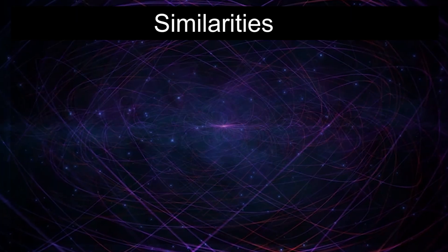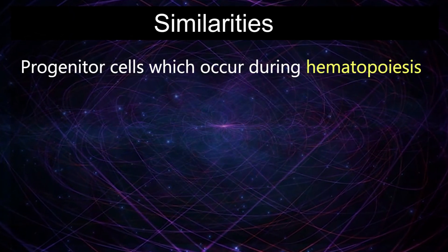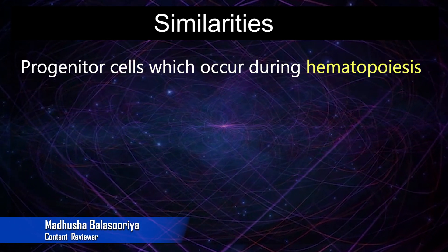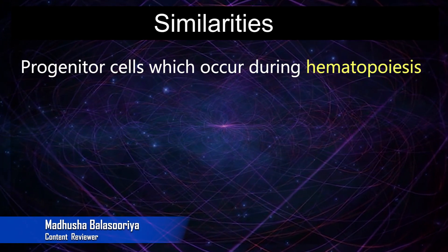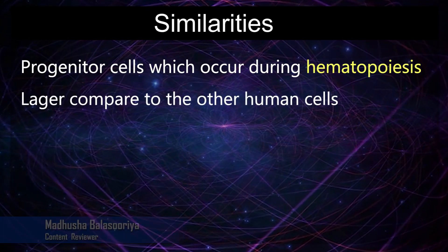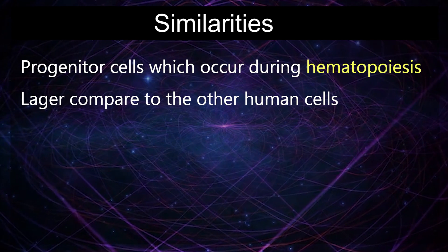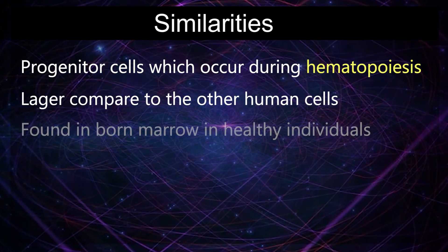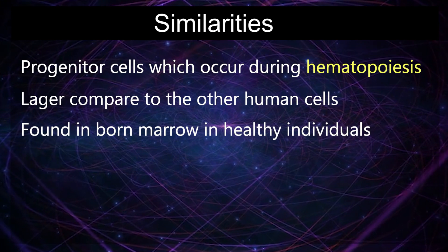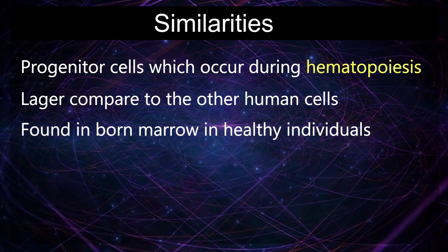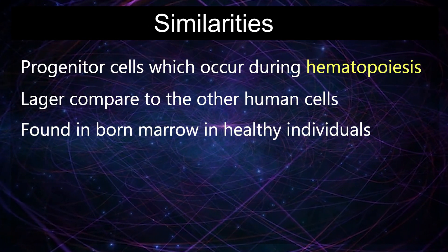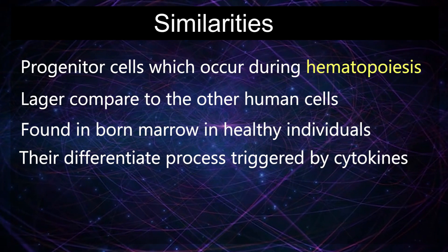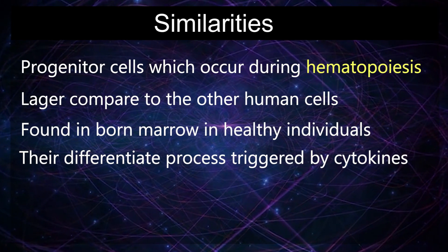Similarities: Myeloblasts and lymphoblasts are two types of precursor cells which occur during hematopoiesis. Usually these cells are larger compared to other human cells and can be found in bone marrow in healthy individuals. In addition, their differentiation process is triggered by cytokines.